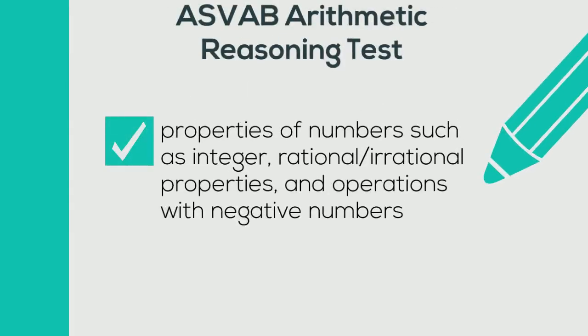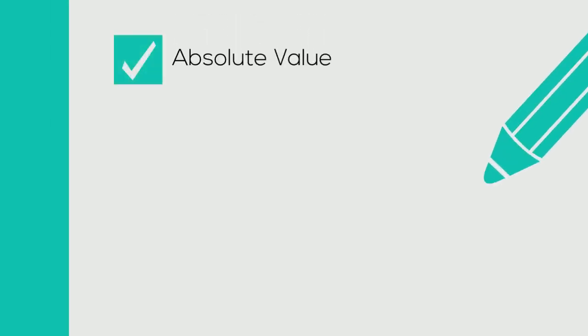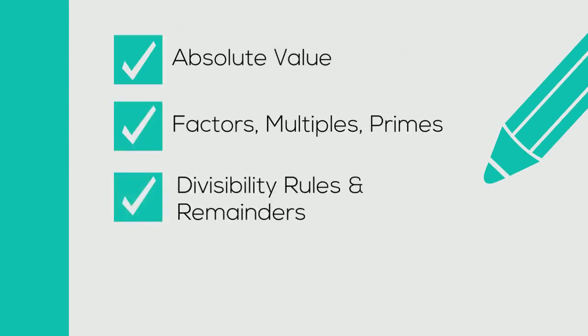The ASVAB Arithmetic Reasoning test includes properties of numbers such as integer, rational, irrational properties, operations with negative numbers, absolute value, factors, multiples and primes, divisibility rules and remainders, fractions and decimals.